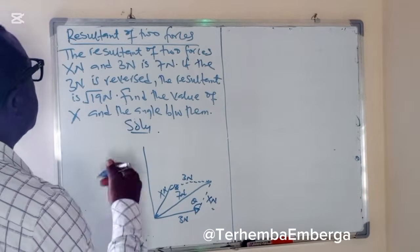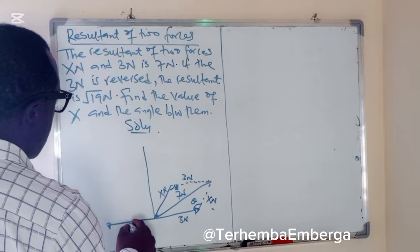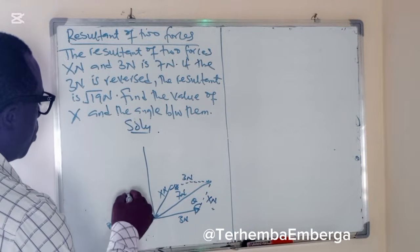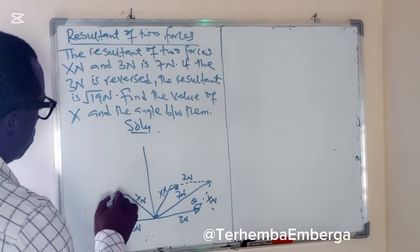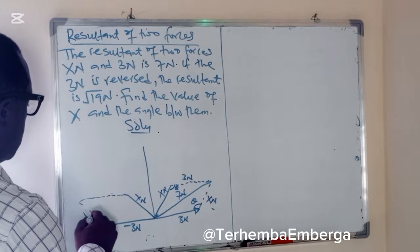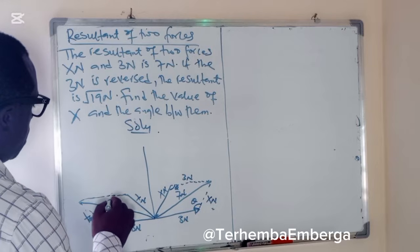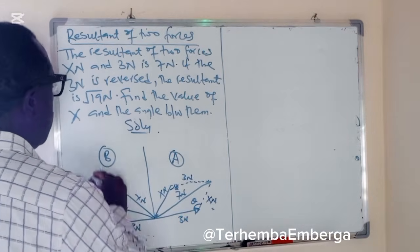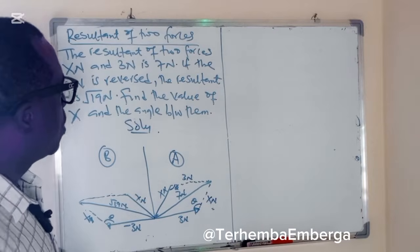The other case is to say if 3N is reversed in the opposite direction — in that case we are talking about minus 3N. So the same way we have XN, we can represent this the same way, and this is also our XN. This is the angle, and in this case the resultant is the square root of 19N. So if this is our A and this is B, we can use the cosine rule to solve this.